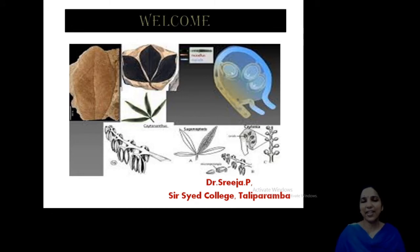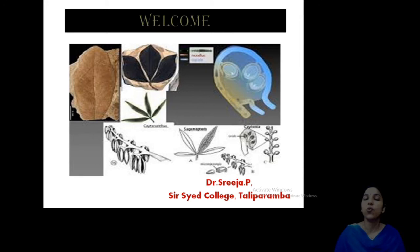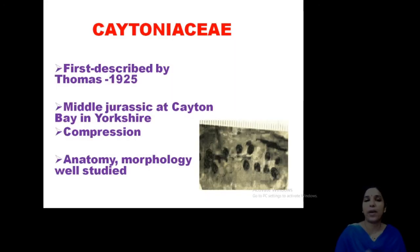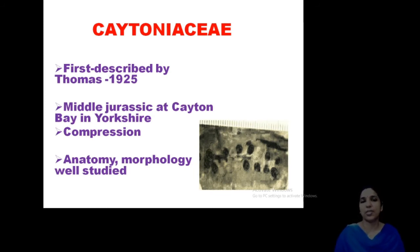Welcome back again. In the last class we finished Glossopteris of Pteridaceae coming under the fossil gymnosperms. Now let us move on to our next family, that is Chitoniaceae. The term Chitonia is there in your syllabus that you have to study.